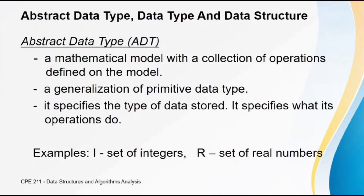We have here three terms: first, abstract data type; second is data type; and third is data structure. Let's go over each one of these terms and later compare and contrast them, finding out the similarities and differences of these three terms.